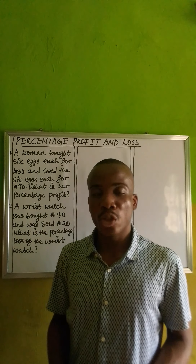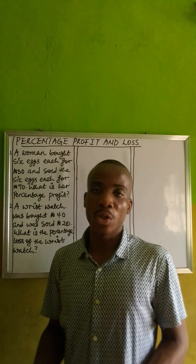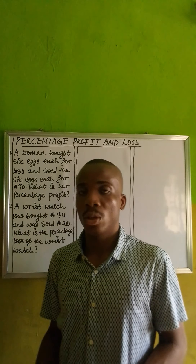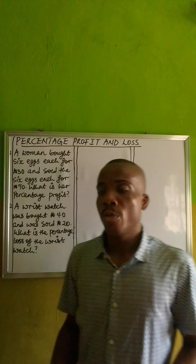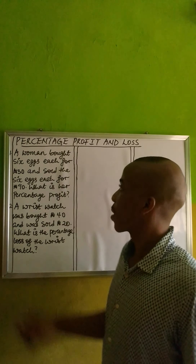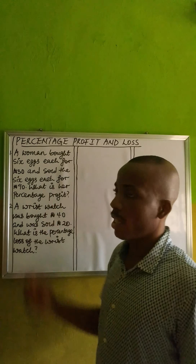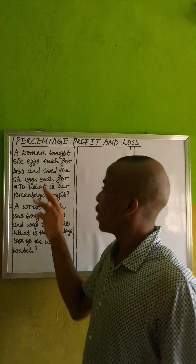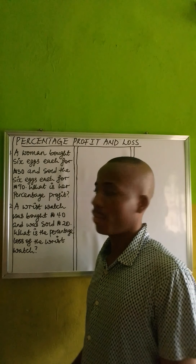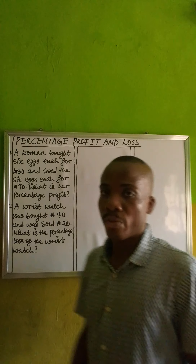We need a profit to get the percentage profit, and we need a loss to get the percentage of the loss. From this question here, in the first one it says: a woman bought 6 eggs each for 30 Naira and sold the 6 eggs each for 90 Naira. What is the percentage profit?